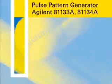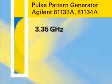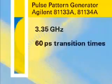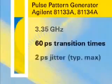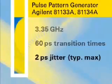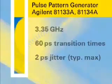This video will provide you with insight into the Agilent 81133A and 81134A 3.35 GHz high-speed pulse and pattern generator. The Agilent 81133A and 81134A are pulse and pattern generators with 3.35 GHz maximum frequency, fast 60 picoseconds transition times and typically less than 2 picoseconds of total jitter. The 81133A is a single channel generator while the 81134A is a dual channel configuration.